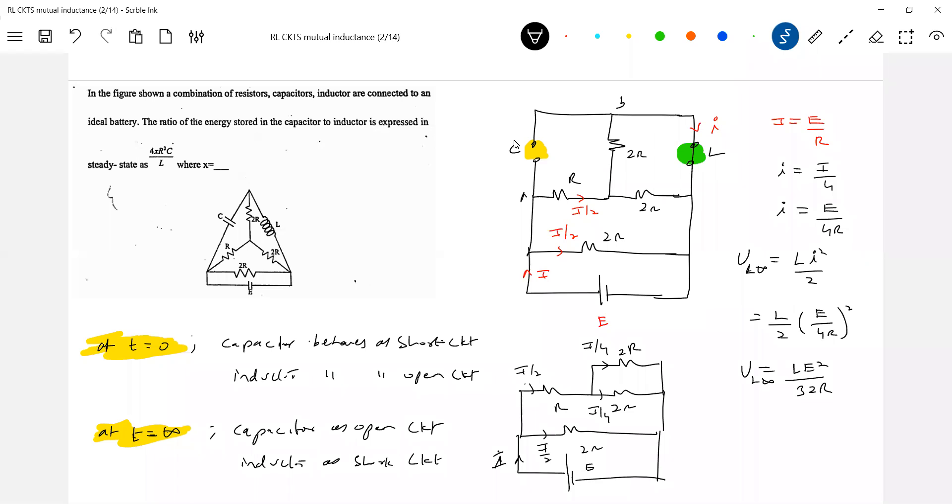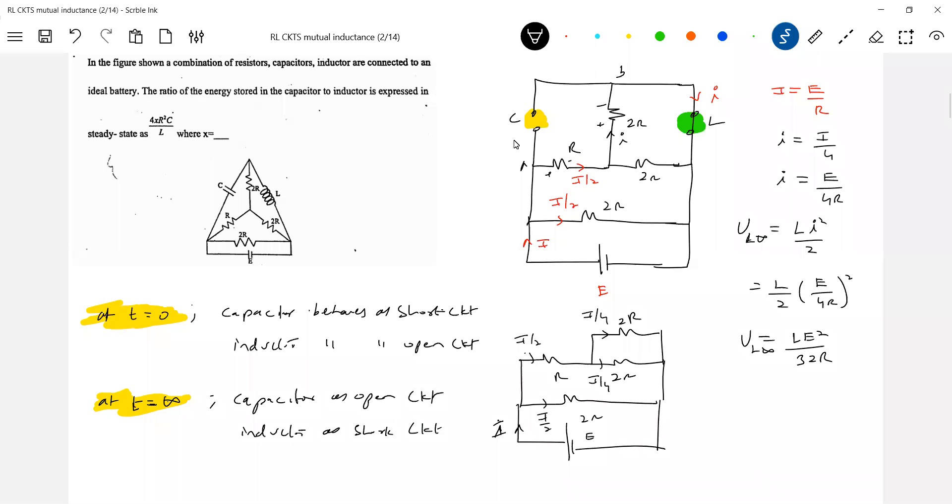Then energy across the capacitor. For that we should know the potential difference VAB. And in the current here, how much it will be? Same i only. So give polarity plus minus. Write the potential drop VAB. VA minus I by 2R minus I into 2R minus VB equal to 0. I is E by... This is E by 2.